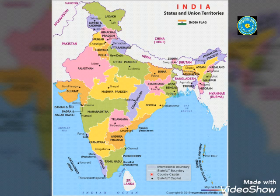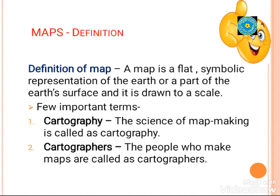First we need to know what a map is. A map is a flat symbolic representation of the earth or a part of the earth's surface, and it is drawn to a scale. That means we can show different features of the earth by using different symbols on a map. You all need to remember that a map is always drawn according to a scale. We will discuss about the scale in detail later.